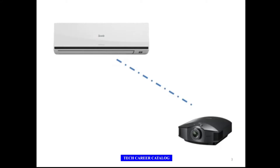So the projector will send a message to the AC: 'Hey, I am getting hot, do something.' The AC will respond. When these objects or things start forming their own internet, that is called the Internet of Things. It's like they are having their own internet for communication purposes.